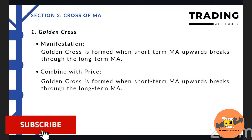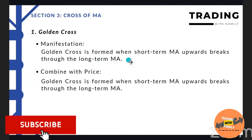The field of the signal of the MA - we can use it to judge whether it's a buy or sell. So the first Cross of MA is the Golden Cross. For the manifestation of the Golden Cross, it's formed when the short-term MA upwards breaks through the long-term MA. Your short-term MA line breaks through the long-term MA line. Combined with the price, the golden cross is formed when the short-term MA upward breaks through the long-term MA.